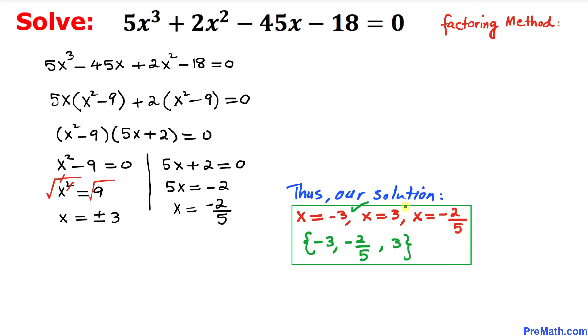Thus our solution turns out to be x = -3, x = 3, and x = -2/5. And this is our set notation. Thanks for watching and please don't forget to subscribe to my channel for more exciting videos. Bye!